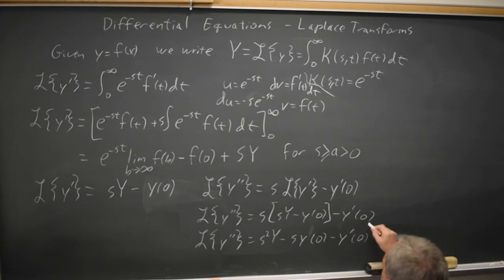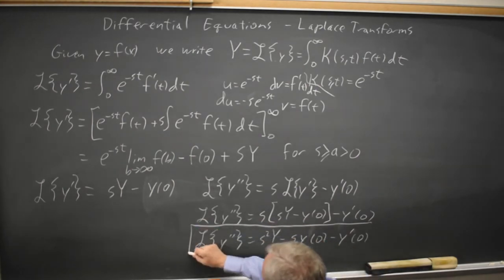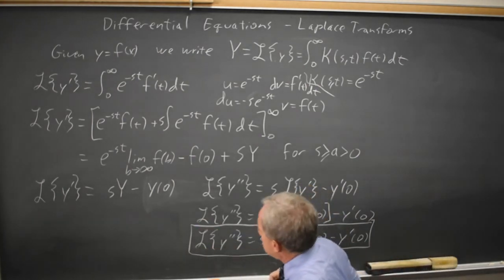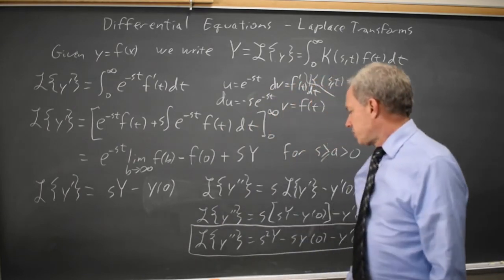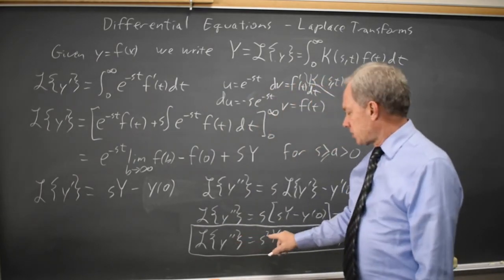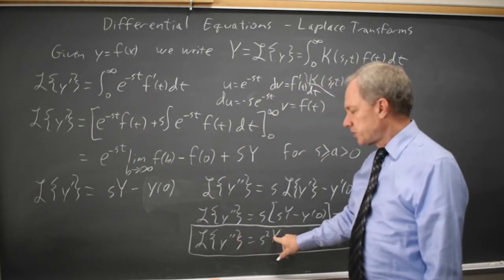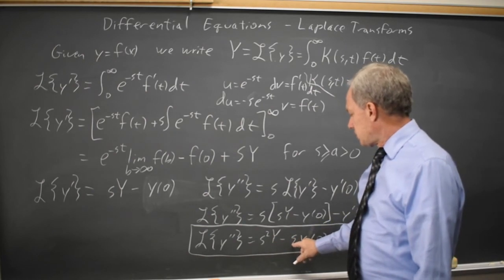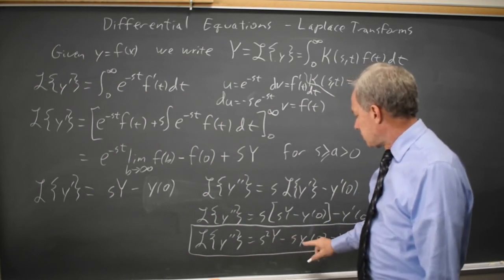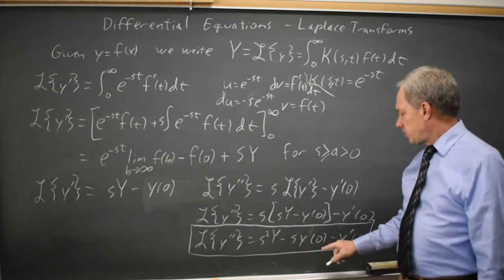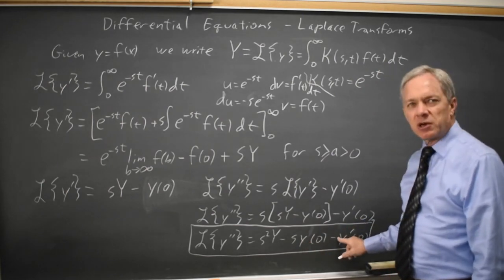And we can continue that process to get the transform of any derivative. The transform of the nth derivative is s to the n times the transform of your base function, minus s to the n minus 1 y of 0, minus s to the n minus 2 y prime of 0, etc.